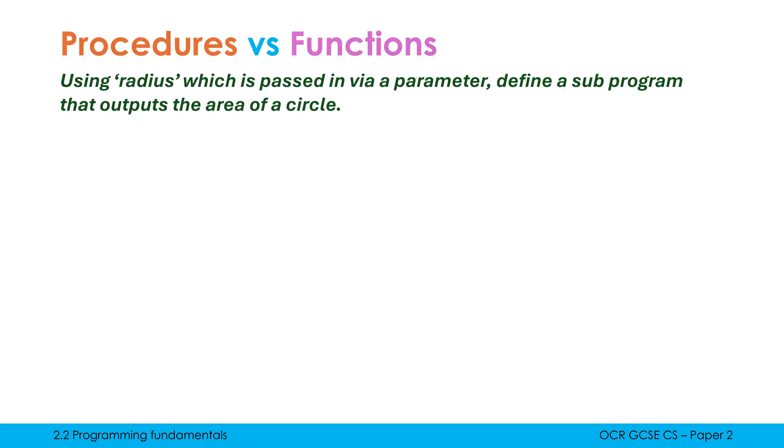Let's look at these side by side with a question. Using radius, which is passed in via a parameter, we're going to define a subprogram that outputs the area of a circle. I've deliberately not said what subprogram to use or what type of output. Typically the question would tell you. I'm keeping it open-ended so I can show you both side by side.